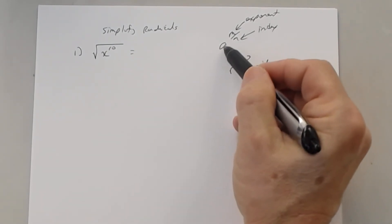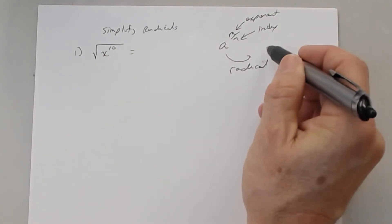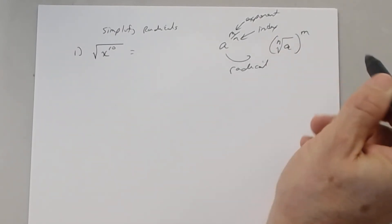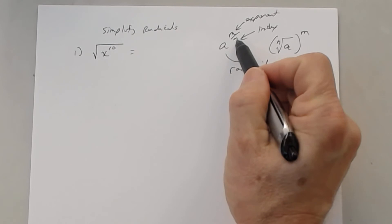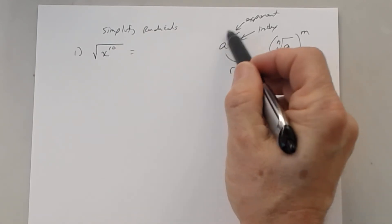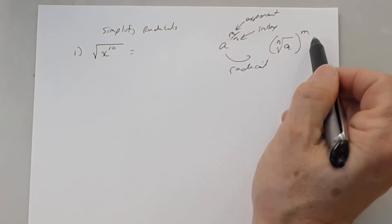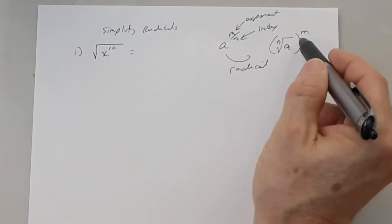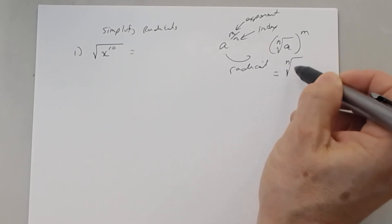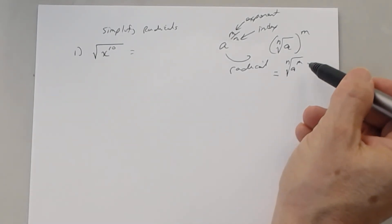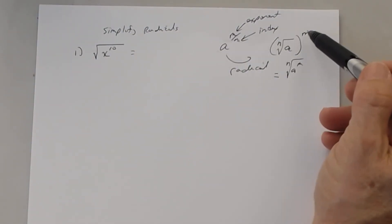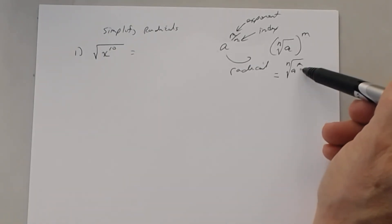So when you had a raised to a fractional power, you wrote this as the nth root of a raised to the m power — the nth root so your denominator was your index, raised to the m power where your numerator was your outside exponent. We also saw that you can put the numerator as an exponent either outside or inside of the radical.